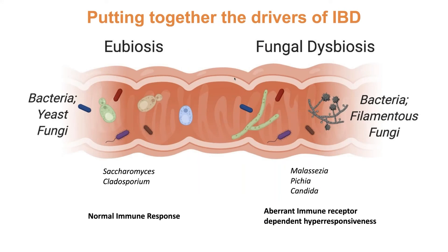Putting together the drivers of IBD, we have a picture of eubiosis — a synergy between bacteria and yeast in the gut — and then a likely fungal dysbiosis, just as you have a bacterial dysbiosis meaning a deviation from optimal function. In the context of IBD, fungal dysbiosis may lead to hyperimmune responses mediated potentially through genetic susceptibility in the repertoire of immune receptors in the host. This is a very active and promising area of research, with Ilya Underhill and others doing some really exciting work.